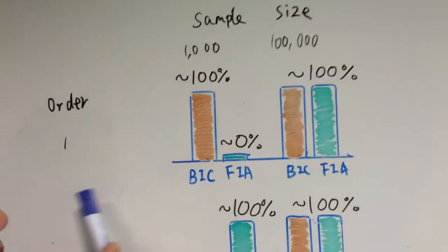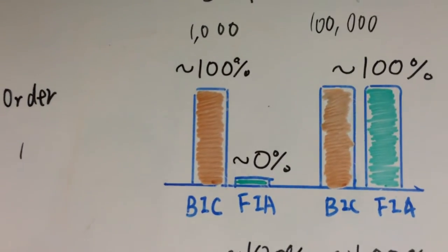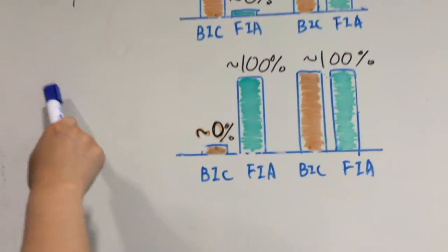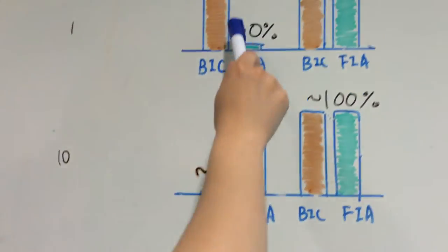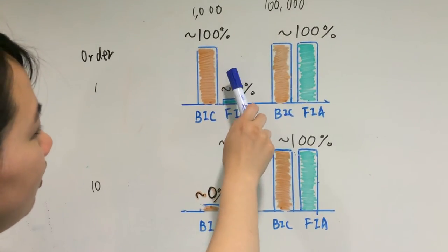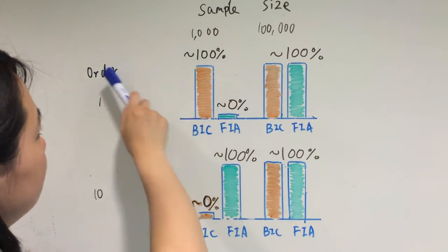For small sample size with 1000 samples, if true model is complex, BIC did very bad. But if true model is simple, FIA did bad.